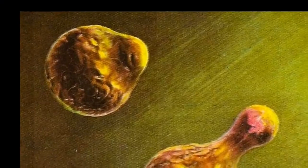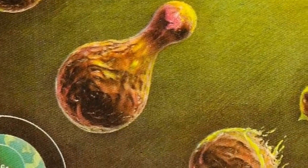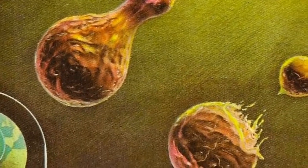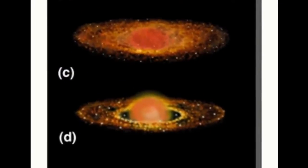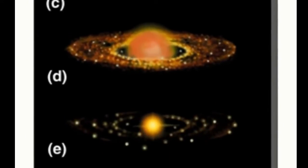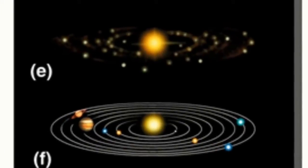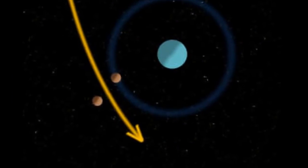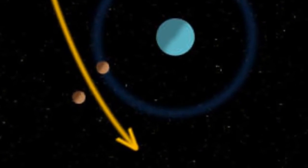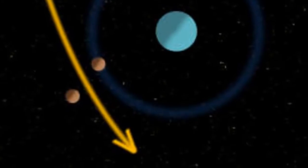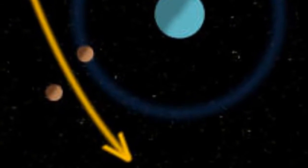The fission theory suggests the moon was once part of the Earth and somehow separated from our planet in its early history. The condensation theory suggests the moon and Earth condensed together from the original nebula that formed the solar system. The capture theory states the moon was formed not in the vicinity of the Earth but in a different part of the solar system and was later captured by the Earth.